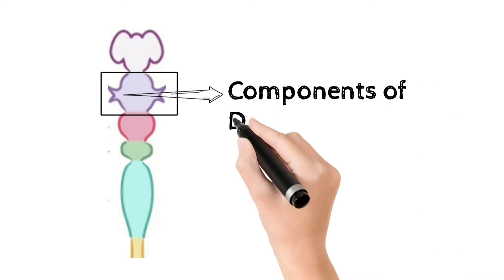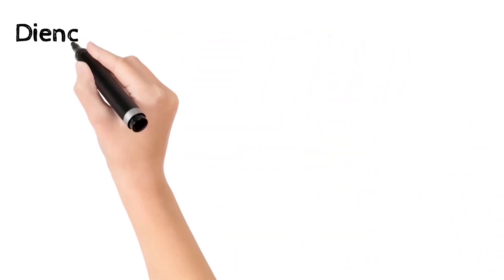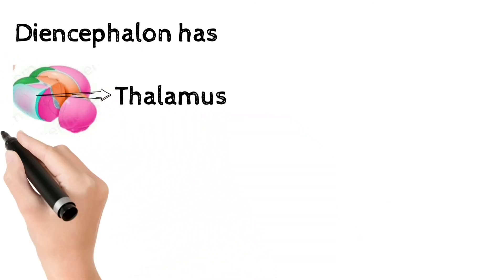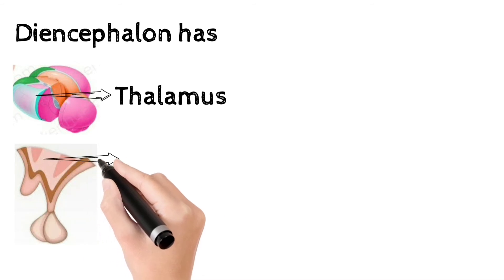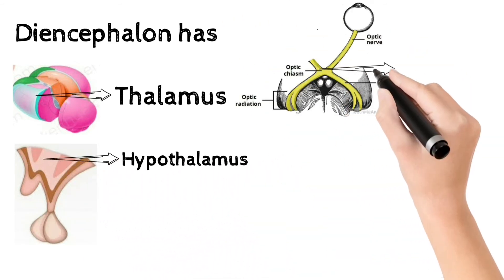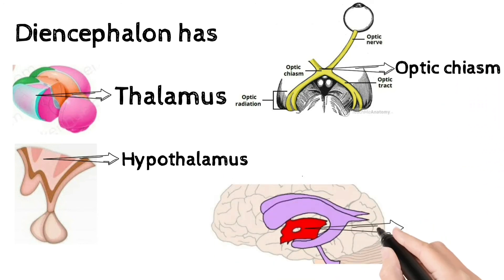Now see components of diencephalon. Diencephalon has thalamus, hypothalamus, optic chiasma. Cavity present in diencephalon is 3rd ventricle.